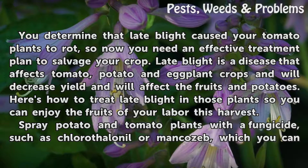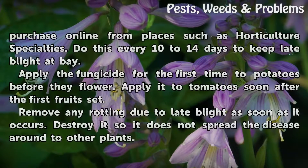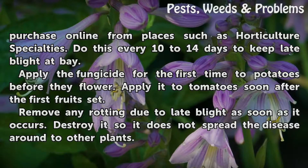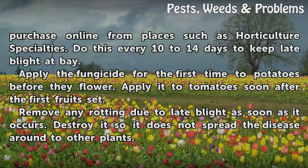Spray potato and tomato plants with a fungicide such as chlorothalonil or mancozeb, which you can purchase online from places such as Horticulture Specialties. Do this every 10 to 14 days to keep late blight at bay. Apply the fungicide for the first time to potatoes before they flower, and apply it to tomatoes soon after the first fruit set.